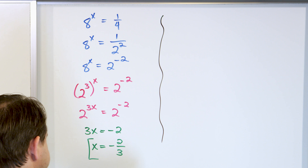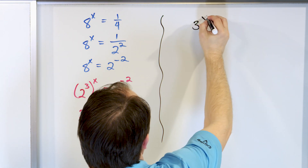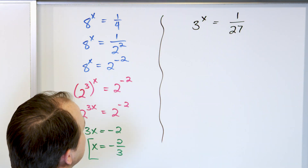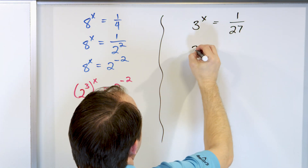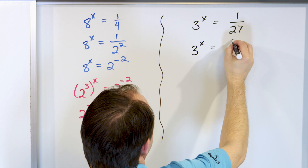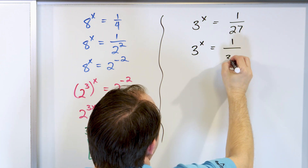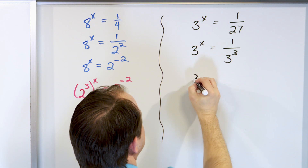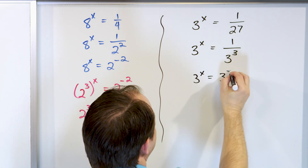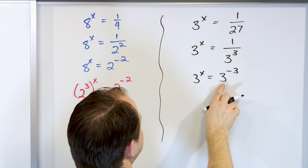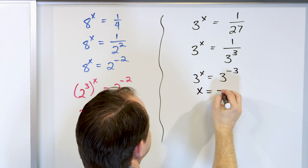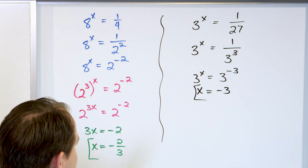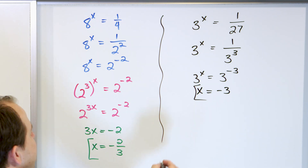Next example: three to the power of x equals one over 27. We know 27 equals three to the power of three. Bringing it upstairs makes it three to the power of negative three. Now the bases are the same, so x equals negative three. That's all you need to do to find the answer.